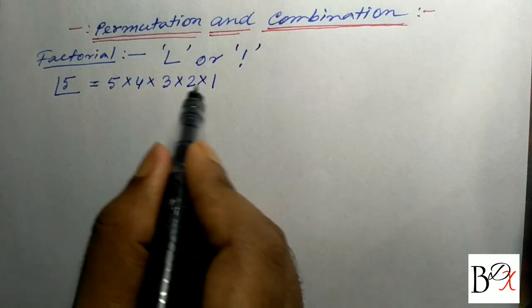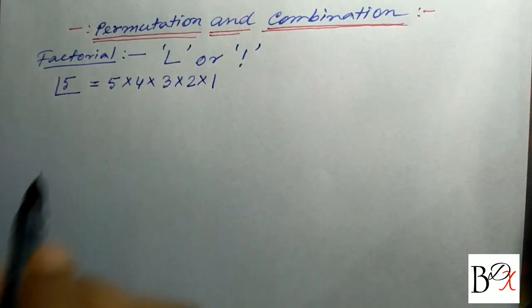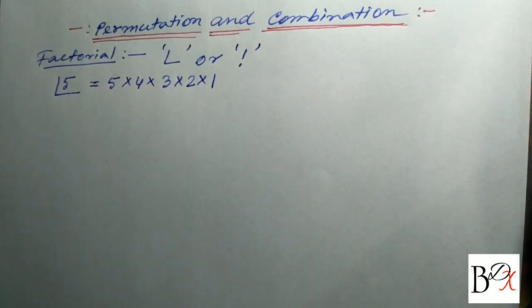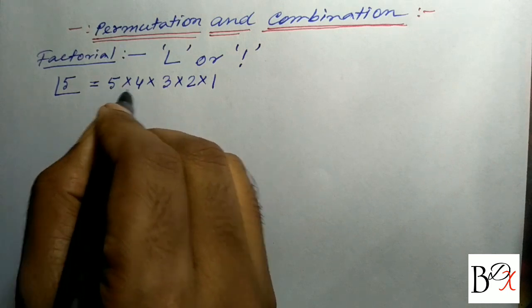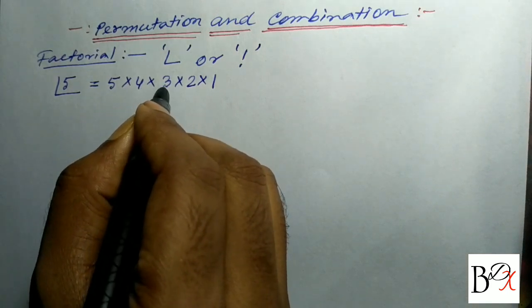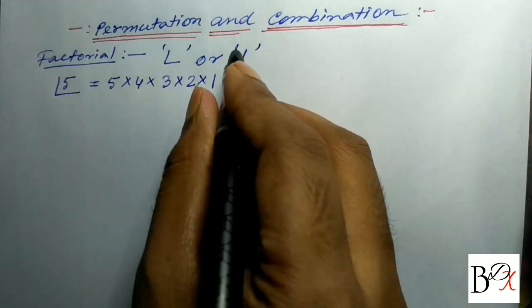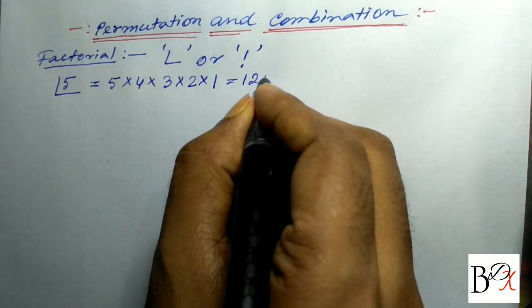We multiply the numbers step by step. 5 into 4 is 20, 20 into 3 is 60, 60 into 2 is 120. So factorial 5 is equal to 120.